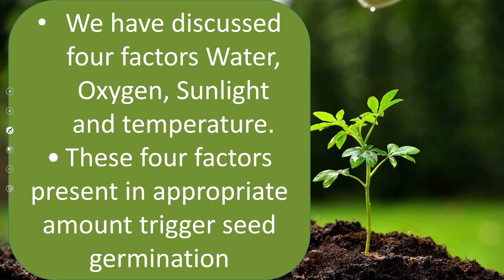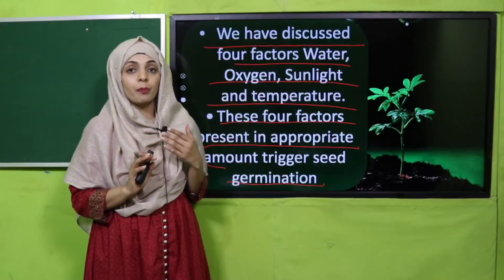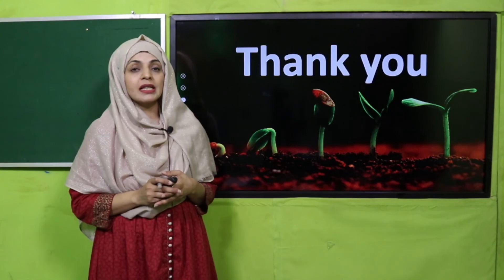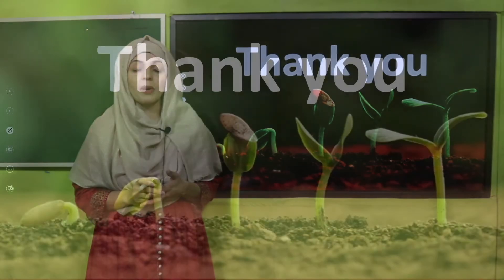Let's quickly wrap up the lesson. We have discussed four factors necessary for seed germination: water, oxygen, sunlight, and temperature. These four abiotic factors, when present in appropriate amounts, trigger germination. I hope you have enjoyed today's lecture. Keep everybody around you safe, have a good day, thank you so much, Allah Hafiz.